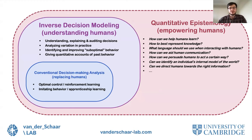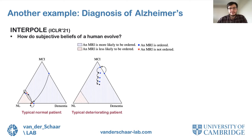While these are the questions we have focused on so far within the IDM framework, the scope of quantitative epistemology as a research plan goes even further than that. Here is another example which showcases the potential of quantitative epistemology as an investigative device for auditing and quantifying individual decisions.